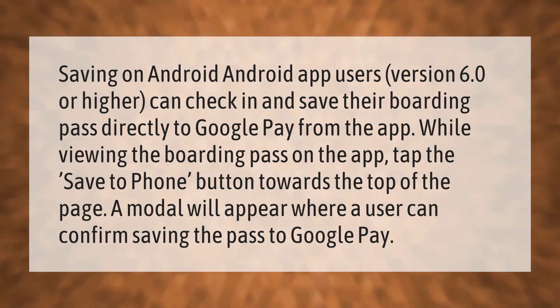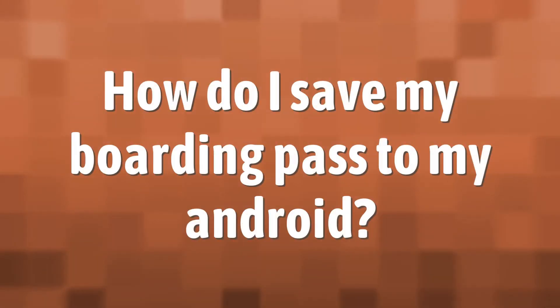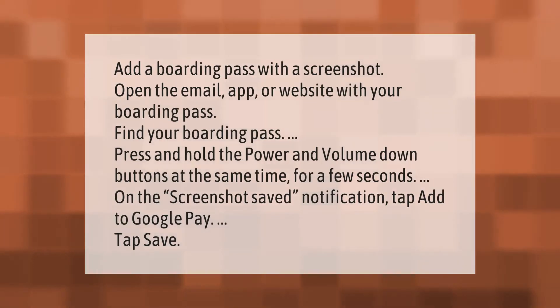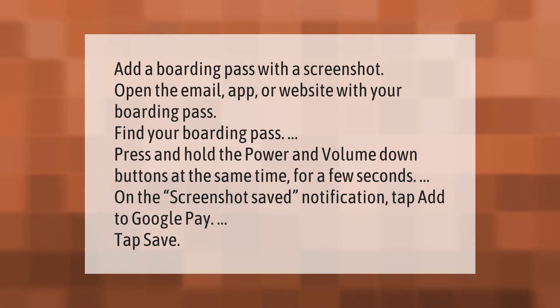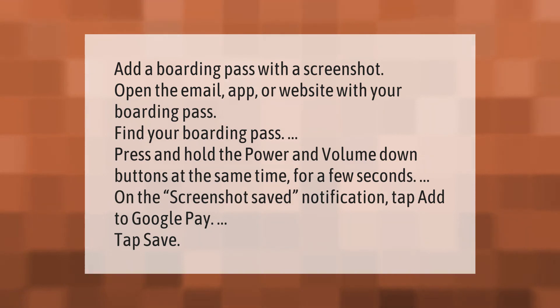To add a boarding pass with a screenshot, open the email app or website with your boarding pass and find your boarding pass. Press and hold the power and volume down buttons at the same time for a few seconds. On the screenshot saved notification, tap 'Add to Google Pay,' then tap Save.